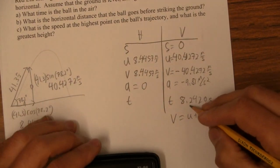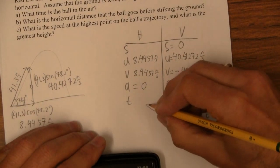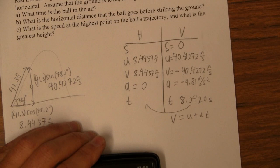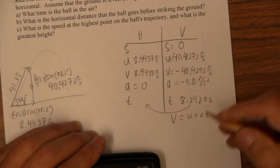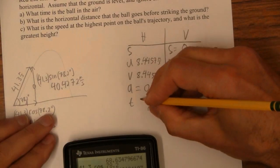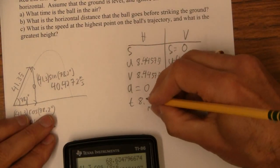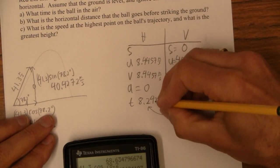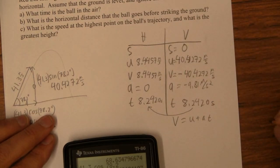Remember that once you get the time on this side, you can kind of slide it over there. It's going to stop moving horizontally when it hits the ground. So we can put that guy here, 8.2420 seconds.